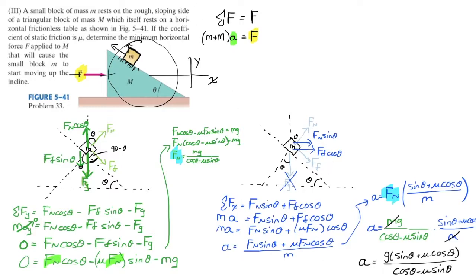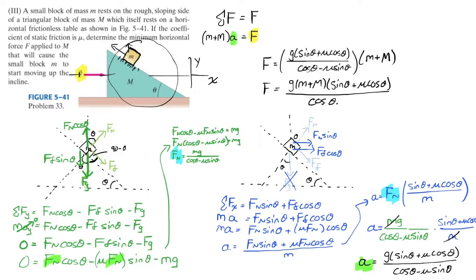And this is exactly what I want because I'm simply going to replace it now with this. So finally we can say that the force is going to be equal to A times M plus M. So G sine theta plus mu cos theta over cos theta minus mu sine theta times M plus M. I'll write it all as one fraction. I'll have G, M plus uppercase M, sine theta plus mu cos theta all over cos theta minus mu sine theta.